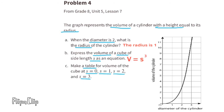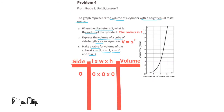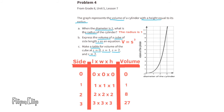Part C. Make a table for the volume of the cube at S equals 0, S equals 1, S equals 2, and S equals 3. When S equals 0: 0 times 0 times 0, volume is 0. When S equals 1: 1 times 1 times 1, volume is 1. When S equals 2: 2 times 2 times 2, volume is 8. When S equals 3: 3 times 3 times 3, volume is 27.